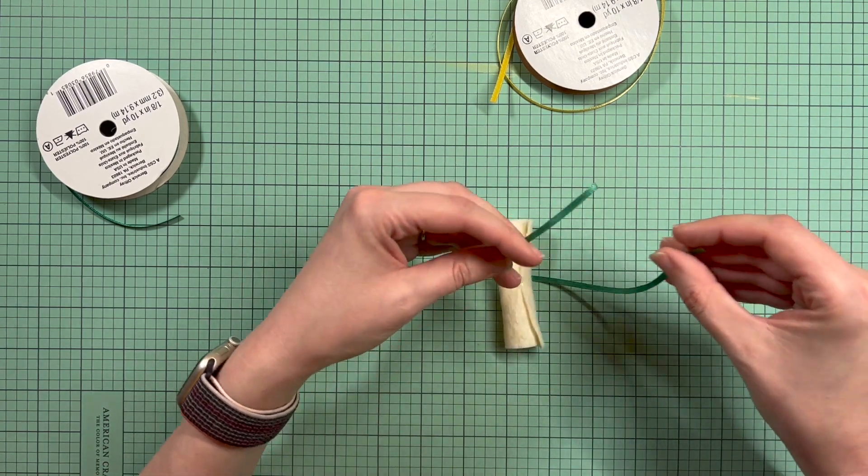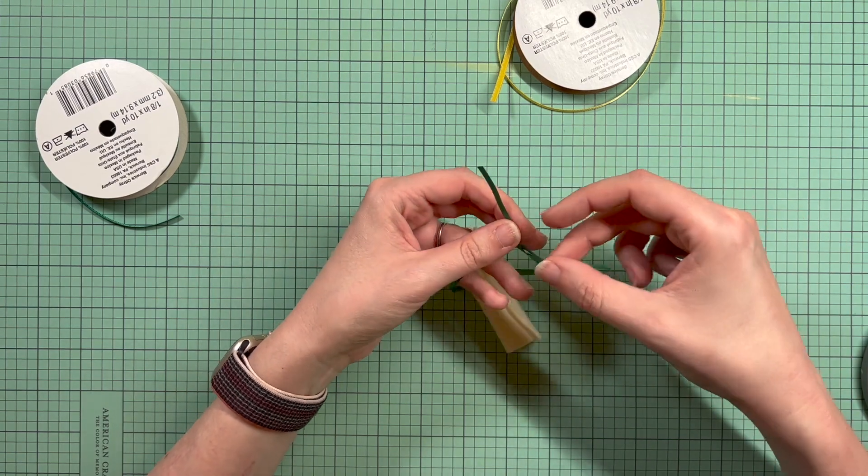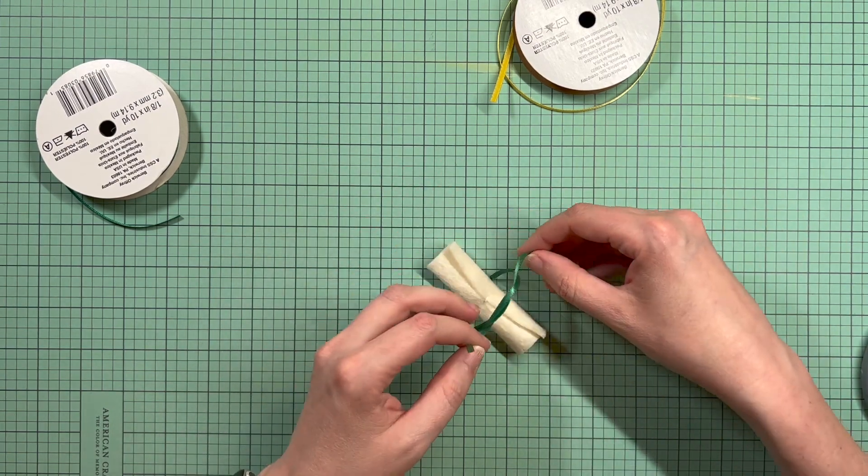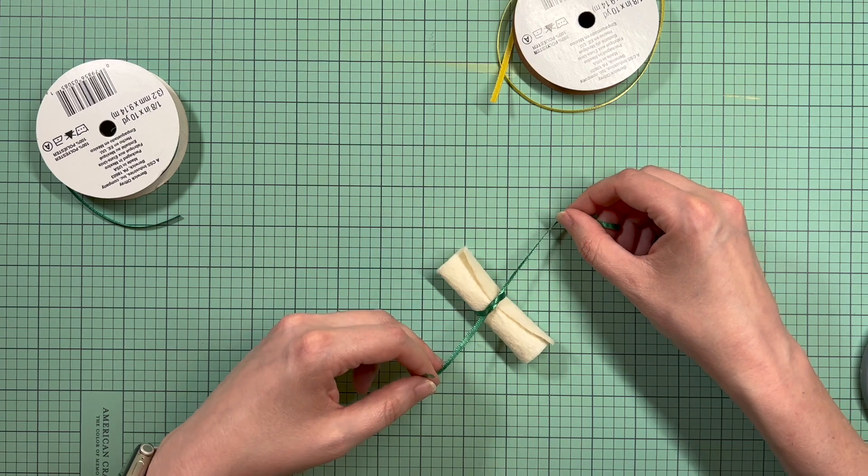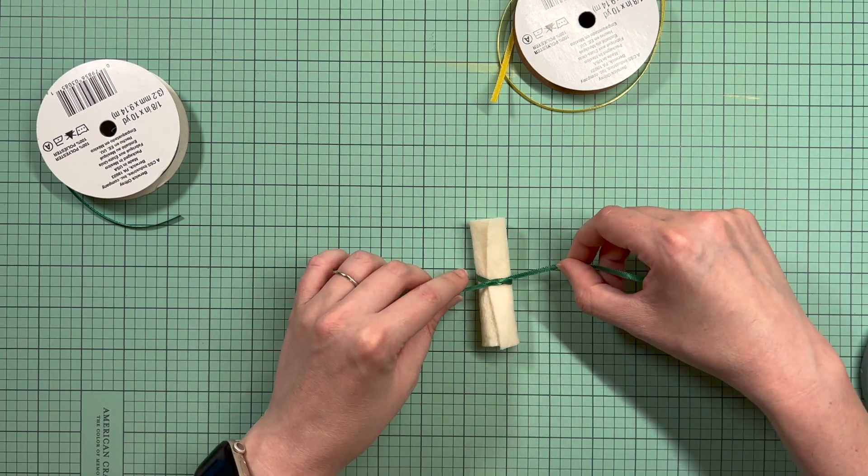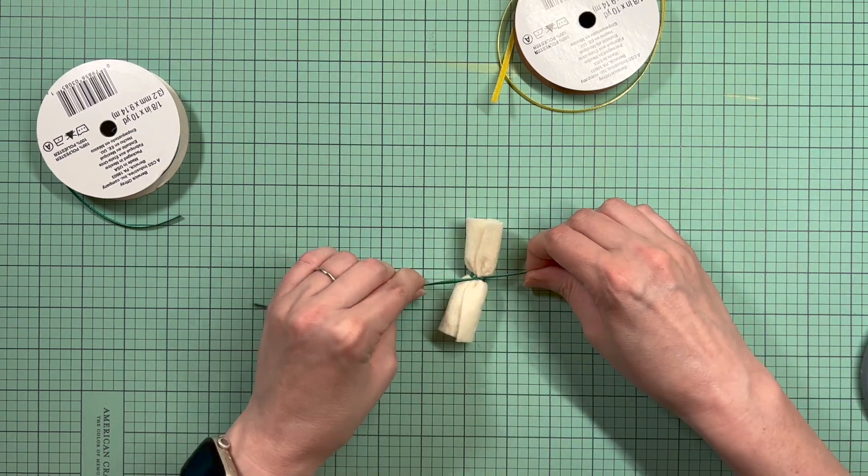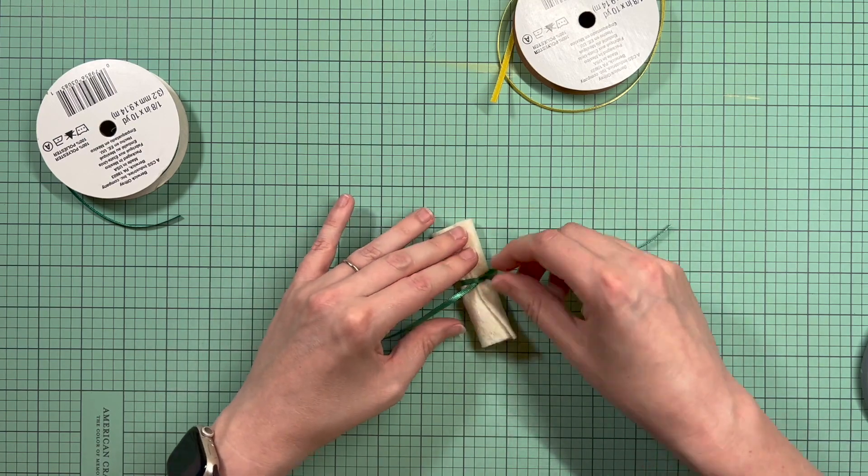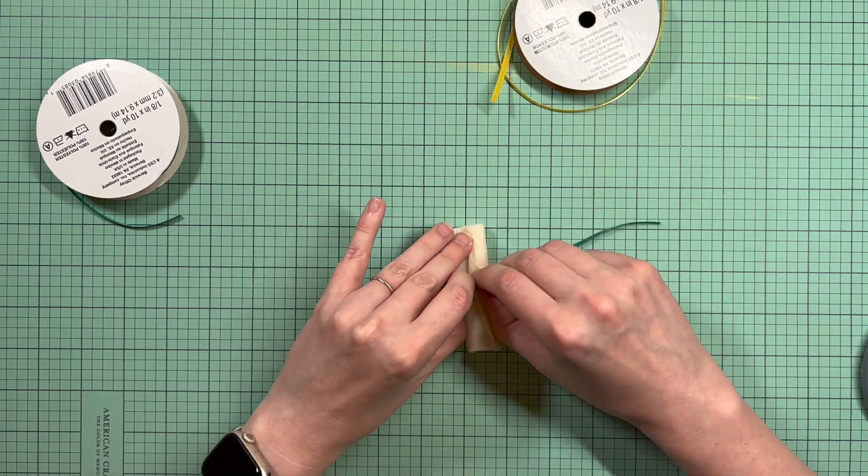And so first things first, I'm going to just loop one end over the other and tie sort of a knot. And again, don't tie too tight because you don't want to really squish your diploma. You don't want it to look like that. You want it to be fairly loose. So I'm going to loosen that back up.